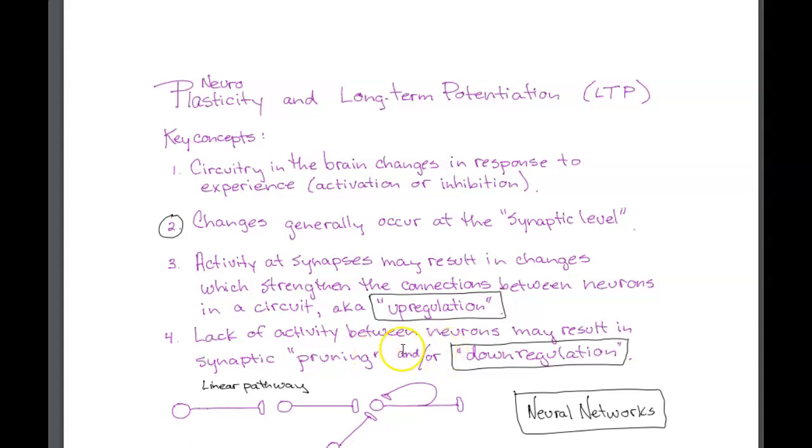The opposite can happen too, and that is that activity can be downregulated such that it becomes less active because we aren't using that circuit anymore, so it basically downgrades a bit. We've talked about communication between one neuron and another, but really we understand that in most cases we aren't looking at something linear, but something that's much more of a network. We're going to talk about neural networks.